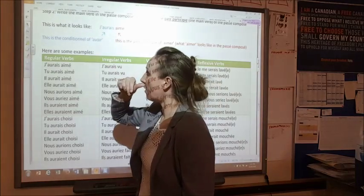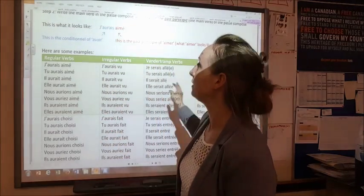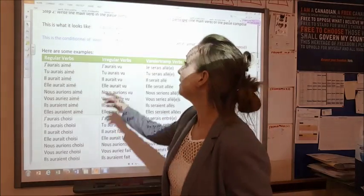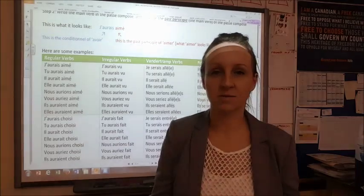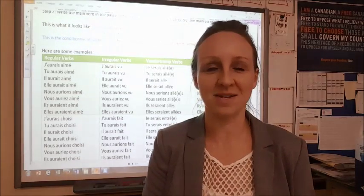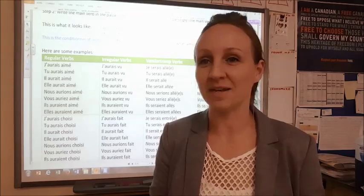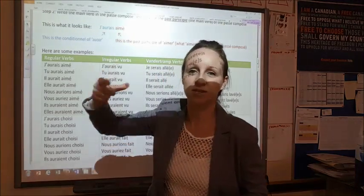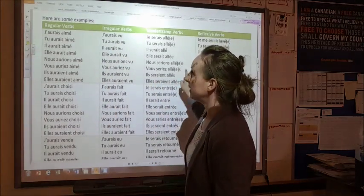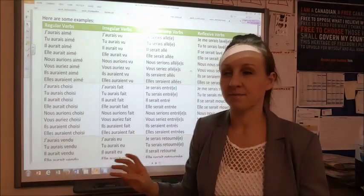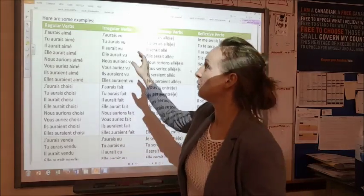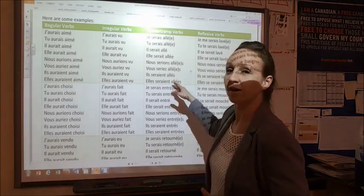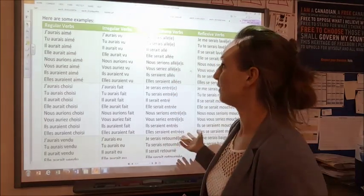We take the conditional of avoir or être, depending on the verb later. But it's only those two verbs, right? It's never going to be the conditional of like faire or whatever. Then over here, this word here is the past participle of the passé composé. So let's say the word is like I took. Well, then it's like I would have taken. But in French, it's still the word like took. So just like the passé composé, the conditionnel passé follows very similar rules, where regular and irregular verbs take avoir as their auxiliary verb, and Vandertramp and reflexive take être as their auxiliary verb.